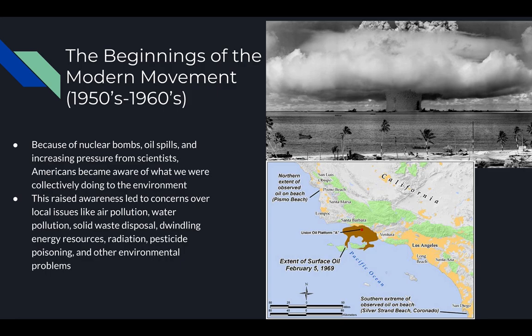During this time, Americans began to become intimately aware of the effects of our actions with the rise of nuclear technology and bombs, oil spills, and scientific advancements showing that air and water pollution were causing harm in many different ways. Operation Crossroads in 1954 exposed an entire 23-man crew of the Japanese fishing boat Lucky Dragon to fallout from a hydrogen bomb test on the Bikini Atoll. This became widely reported in American newspapers, raising concern about nuclear testing. The Santa Barbara oil spill of 1969 dumped 3 million gallons of oil into the ocean, further bringing awareness to what we were doing to the environment.